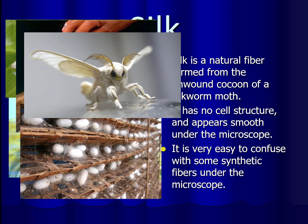Most silk is produced in China, with some trade in India. Because silkworms can only eat one thing — mulberry trees — silk production is concentrated where those trees grow.